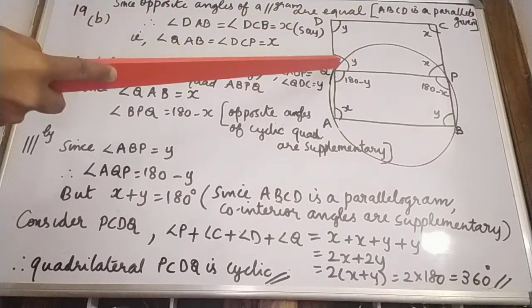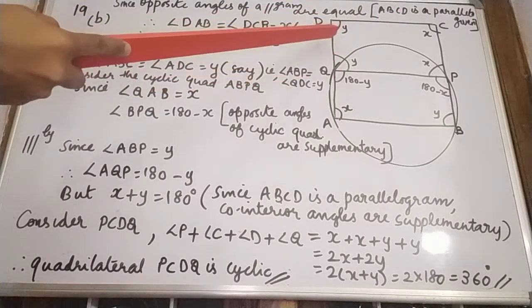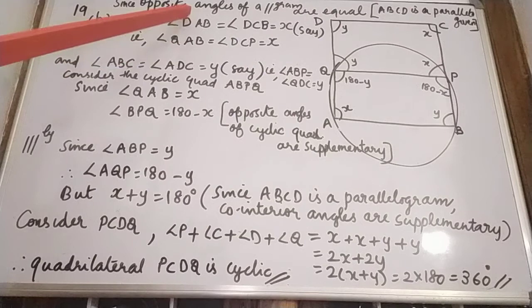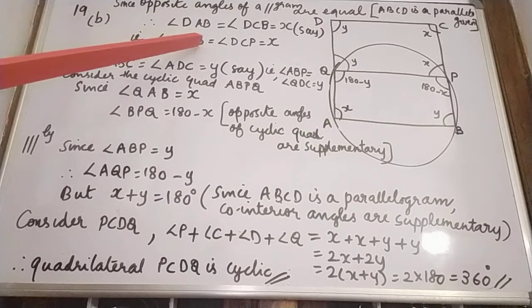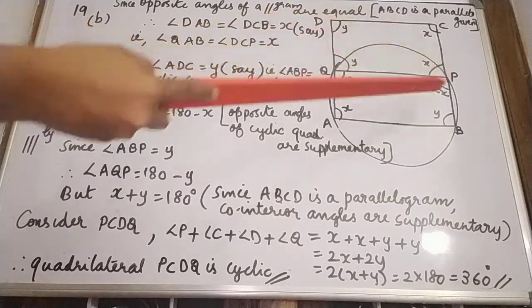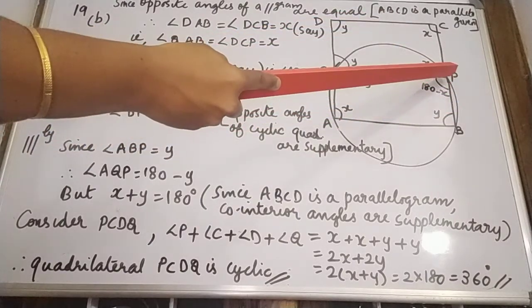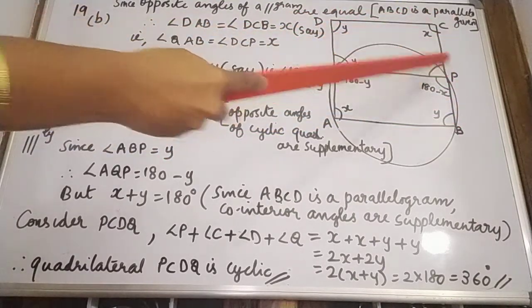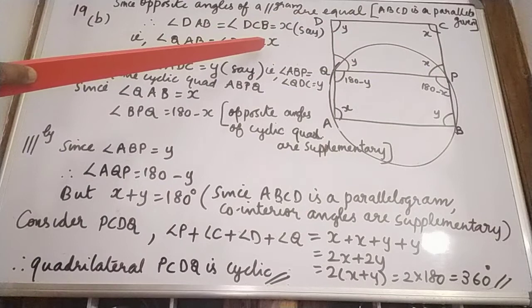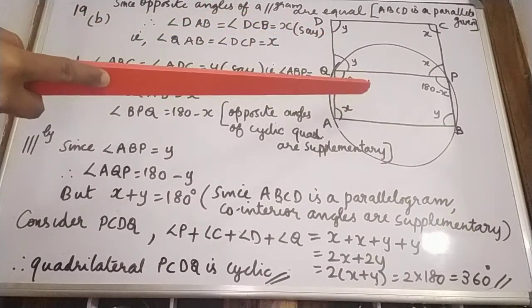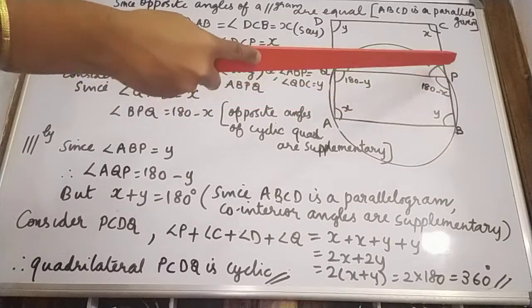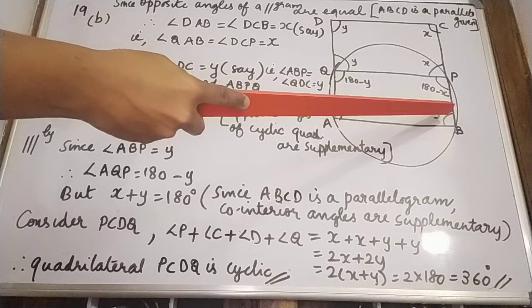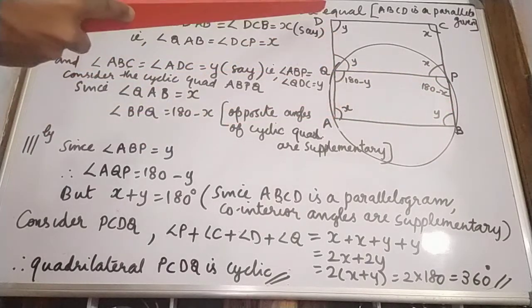Instead of D we replace it as Q, and instead of B we replace it as P. So we can rewrite: angle QAB equals angle PCB, which equals X. Similarly, angle ABC equals angle ADC by the same concept of opposite angles being equal.